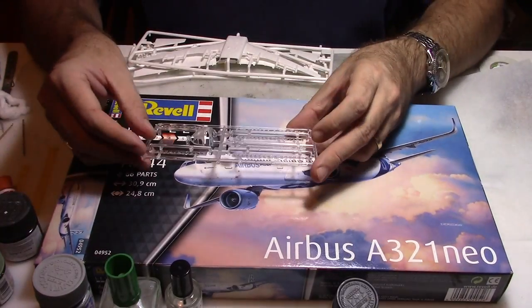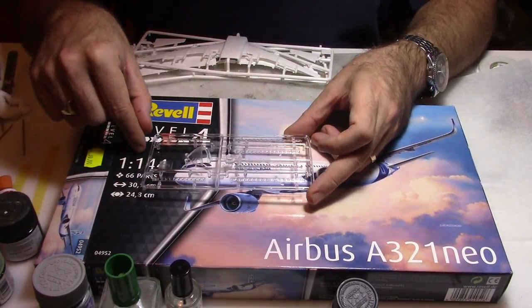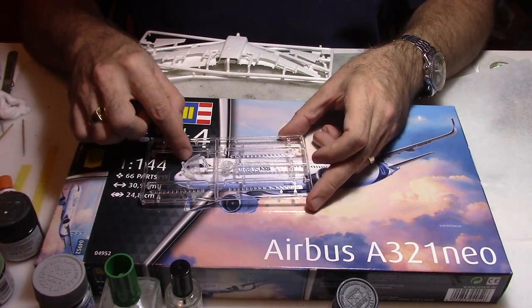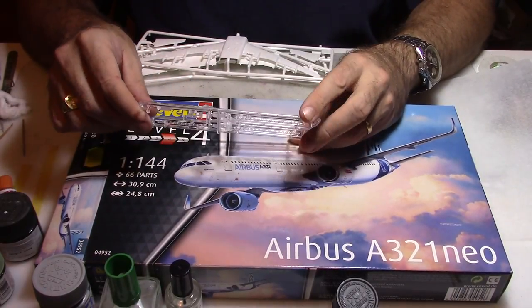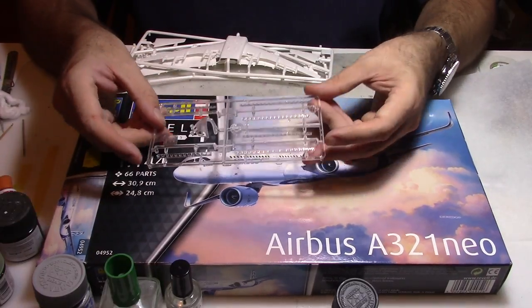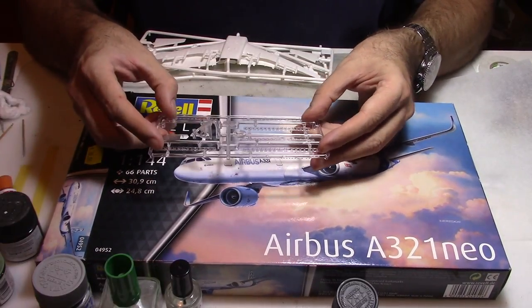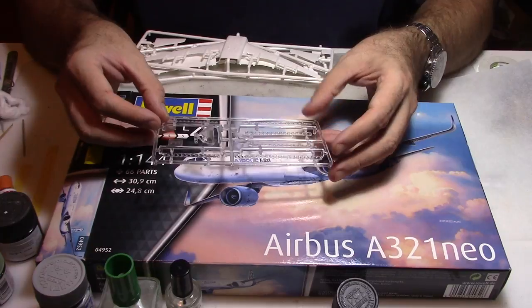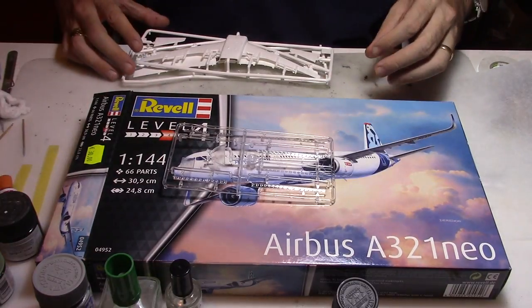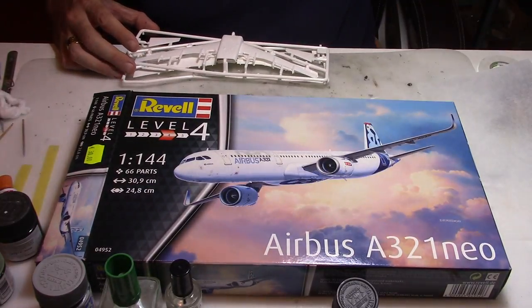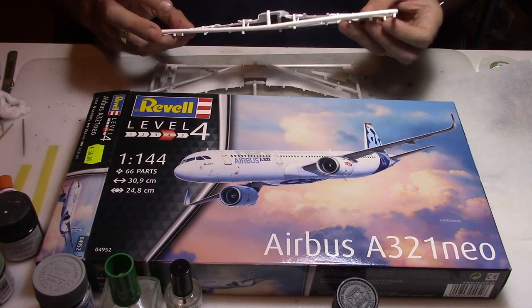Now the clear parts. The new thing is the way they cut, more like the Zvezda kit for the cockpit window. They're also delivering the kit with the passenger windows, which is a big difference from the old A321 kit from Revell that's no longer available.